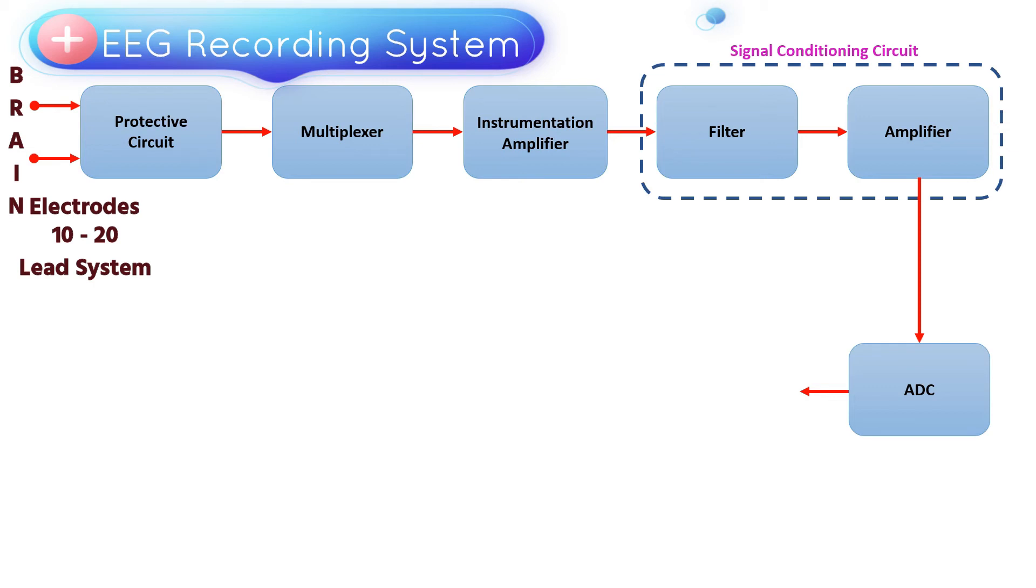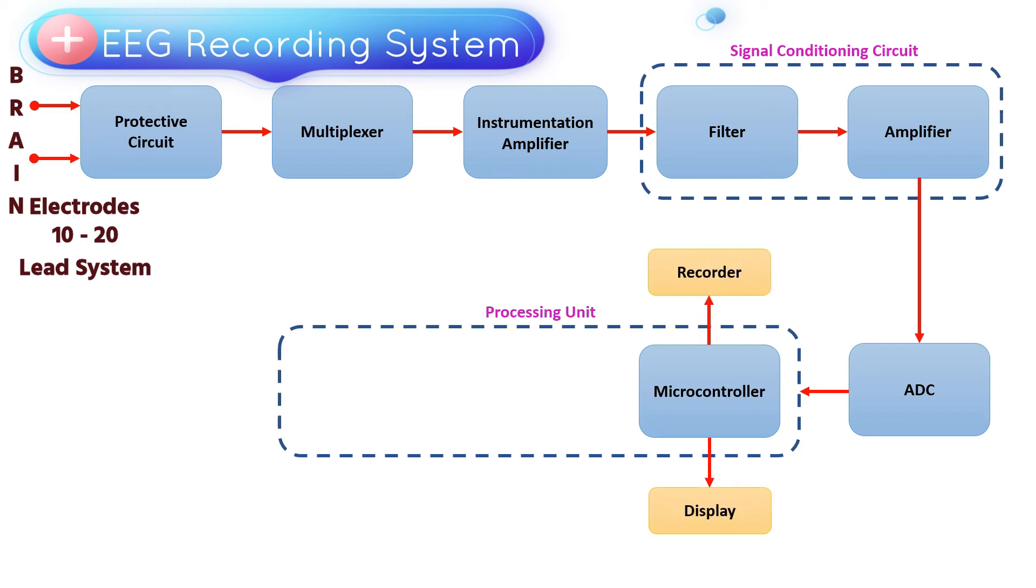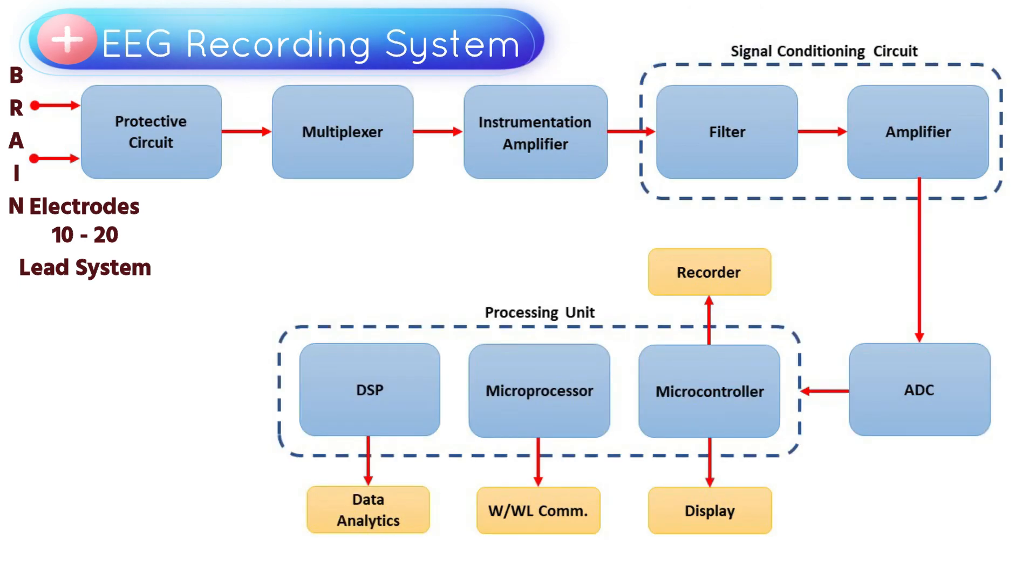Now, the digitized data is transferred to appropriate processing unit based upon its application. In general, we use a microcontroller for direct display or to print on a graphical sheet using recording pen. A microprocessor can also be used to store the data and to communicate with other devices through wired or wireless mode. A DSP processor can be used for data processing and advanced data analysis.